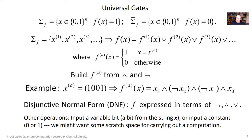So that's the first step. We've written our function as — possibly exponential in n, as many as 2^n — possible functions composed together with the OR connective. The next step is to take the characteristic function and decompose it into simple operations. Let's say we choose the fundamental operations in our gate set to be the AND of two bits and the negation or NOT operation which flips a bit. As an example, I want to construct the characteristic function of the 4-bit input 1001.